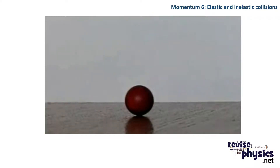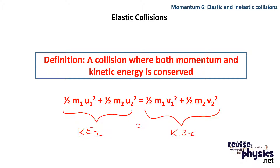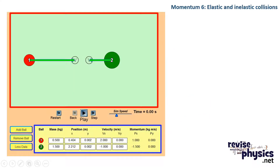This is a great example of our two main types of collision: elastic, like the blue ball, and inelastic, like the red. An elastic collision is where both momentum and kinetic energy are conserved — that is, KE initial equals KE final. Remember that energy is scalar, meaning that even if an object is moving with negative velocity, its kinetic energy is still positive. We don't get negative energies.